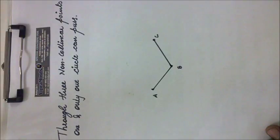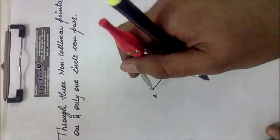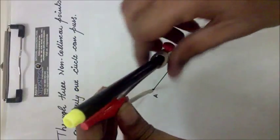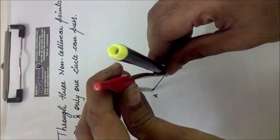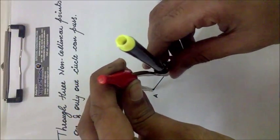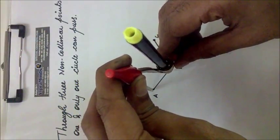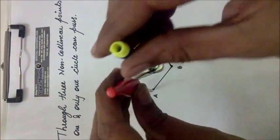Now what we will do is draw the perpendicular bisector of AB. For the perpendicular bisector, you have to take more than half of AB as the compass width. So suppose this is more than half.